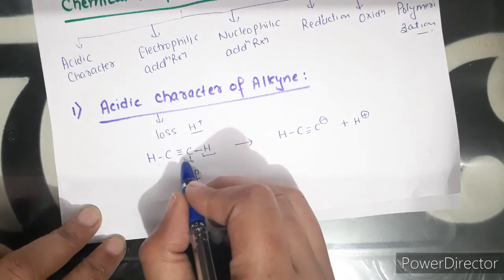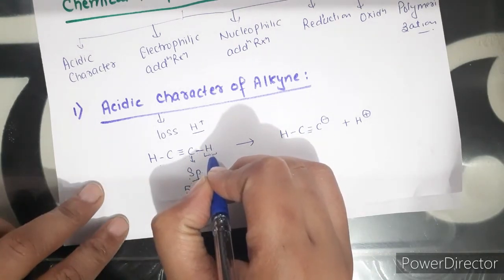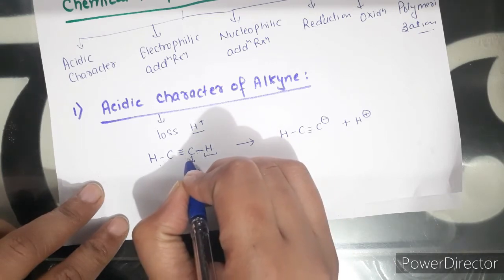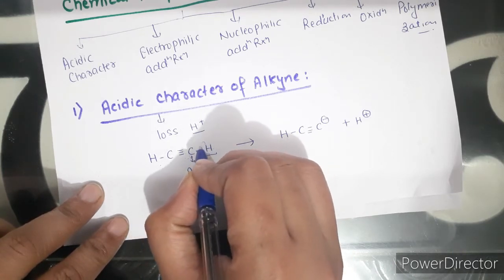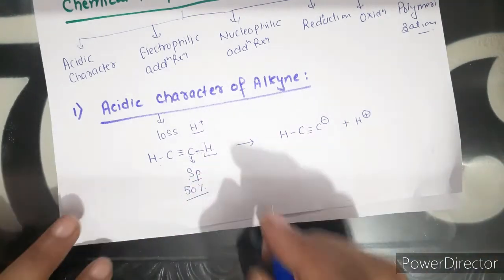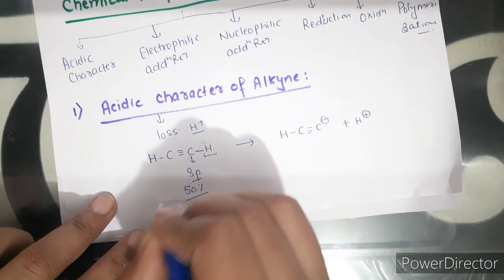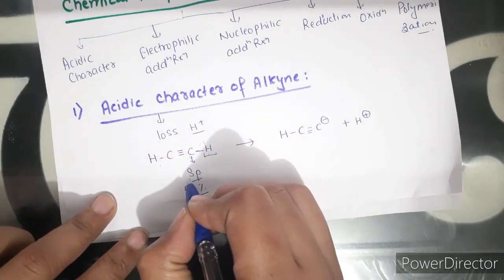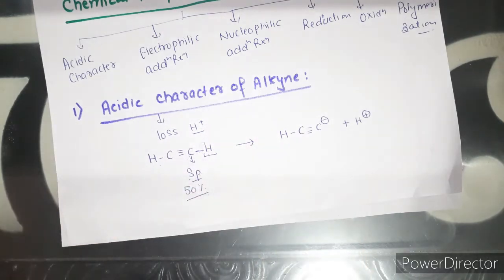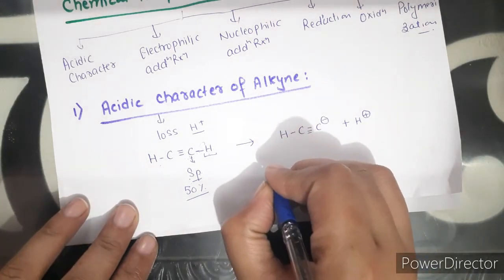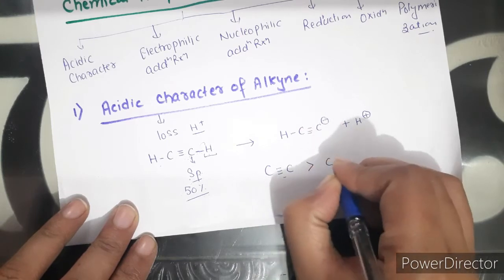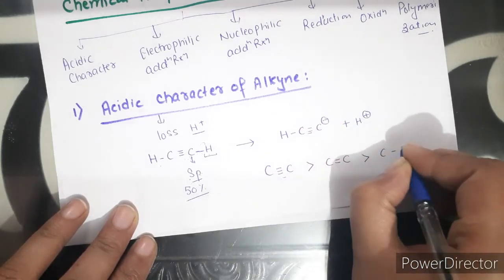Because carbon's electronegativity is high, carbon will attract electrons towards itself. So the hydrogen atom becomes less tightly held by the carbon atom, and removal of H⁺ ion becomes easy — thus acidic behavior increases. With increase in s-character, electronegativity of the corresponding carbon atom increases. The more electronegative carbon attracts electrons, making removal of H⁺ easier. So alkynes are more acidic than alkenes than alkanes.